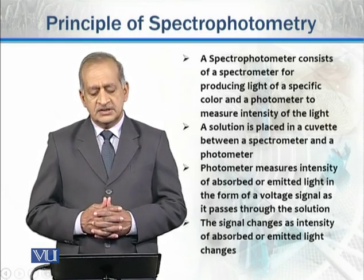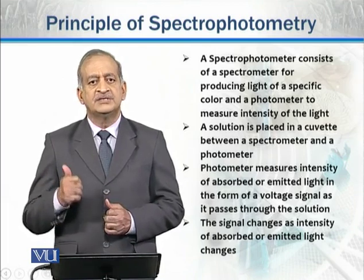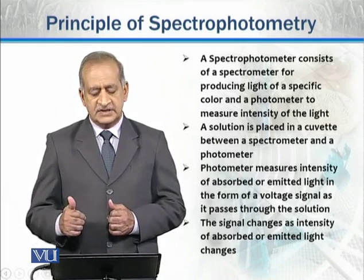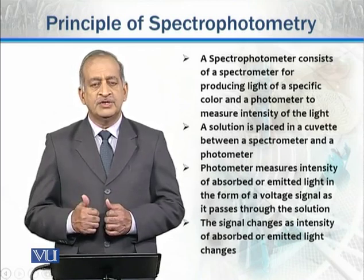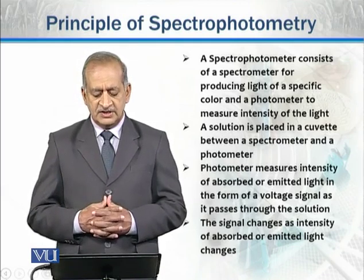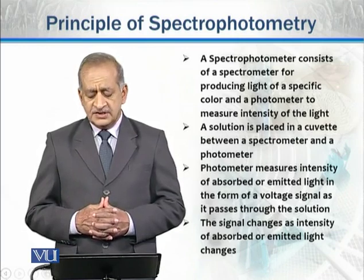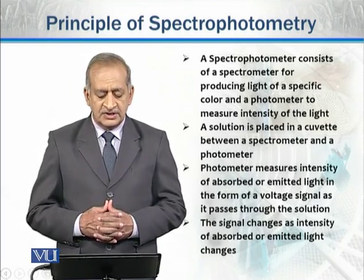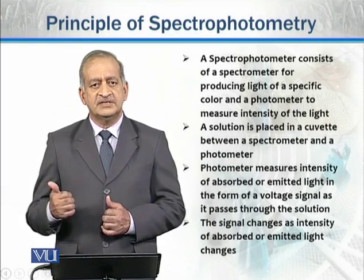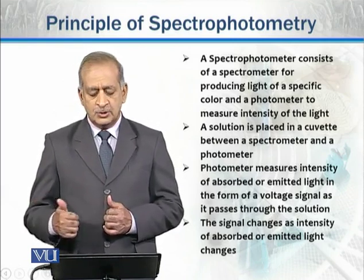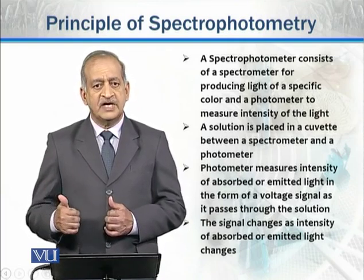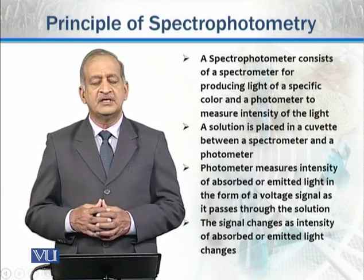The photometer measures the intensity of light in the form of a voltage signal as it passes through the solution. The signal changes as the intensity of absorbed or emitted light changes. Obviously, whichever solution has higher absorbance will have lower transmittance, and vice versa — that depends on the intensity of light passing through or absorbed by that particular substance.